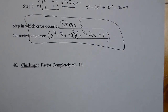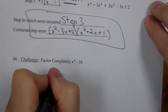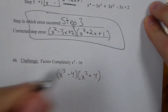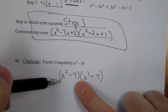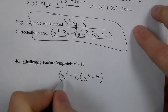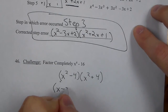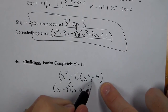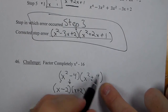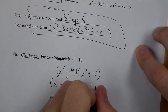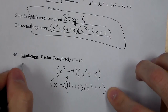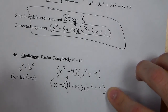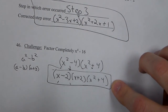The last one is the challenge problem. This is a difference of two squares, so it becomes x squared minus 4 times x squared plus 4. X squared minus 4 is still a difference of two squares, and we can split that into x minus 2 times x plus 2. We can't factor x squared plus 4 because it's not a subtraction — there's no way to get x squared plus 4 as a product. So wherever you see a squared minus b squared, you can write it as a minus b times a plus b, and here it repeats to give our fully factored answer.